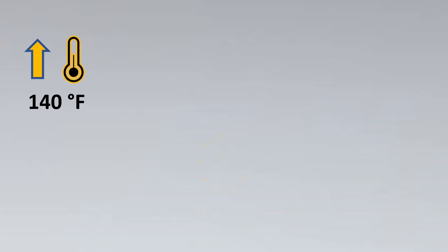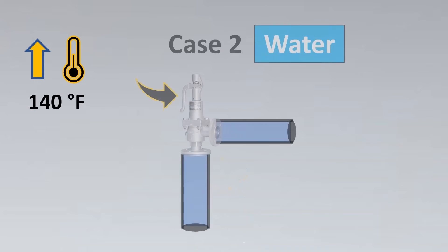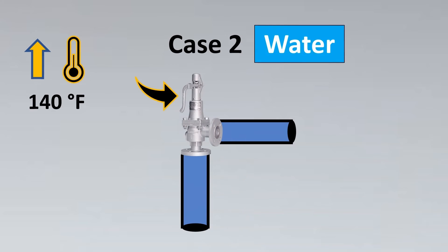Now the next question is: for our case 2, why was the answer only partially correct? The answer is because the water temperature also has to be known. If the water temperature is above 140°F, only then would we go for a lever in this case.